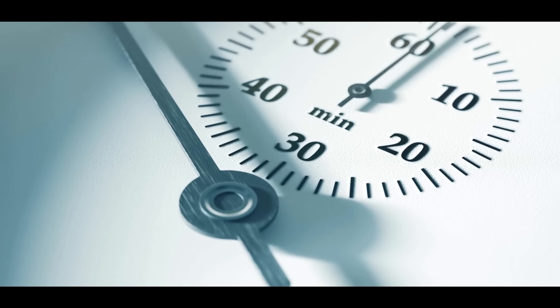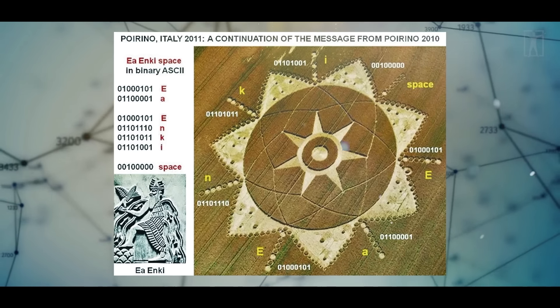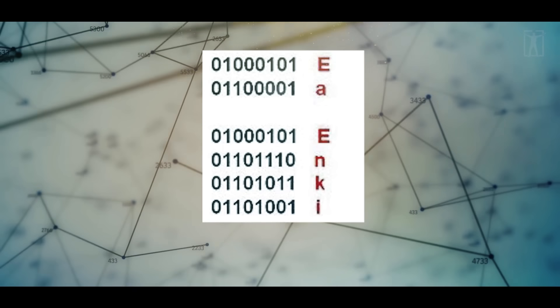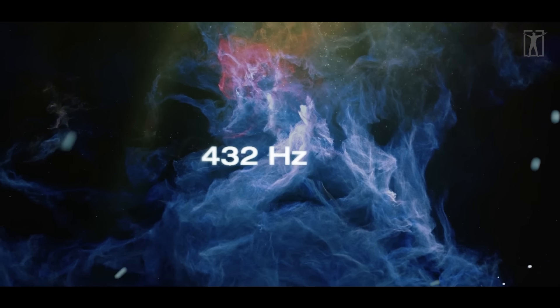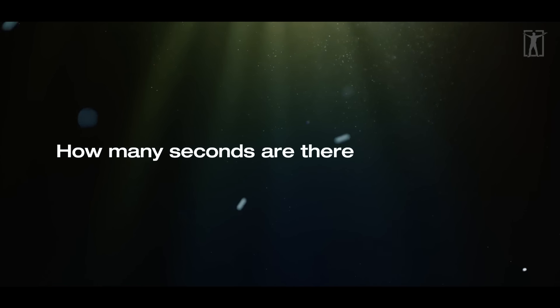The 60-based mathematical system that led to the invention of the second is not only thousands of years old, but was allegedly gifted to humanity by heavenly visitors from the skies — the Annunaki. The precise ASCII code drawn at Poirino, reading clockwise around its large seven-pointed star, suggests the Annunaki are communicating sacred knowledge through encoded crop circles relating to the 432 Hz frequency. Within 1% accuracy, the speed of light is 432 squared. Is our number and timekeeping system based on 432 Hz and 9 mathematics?